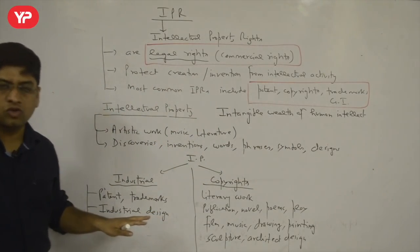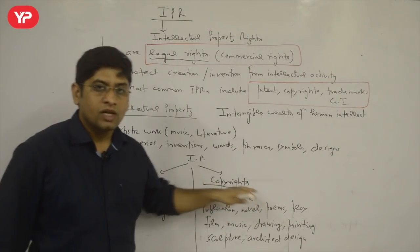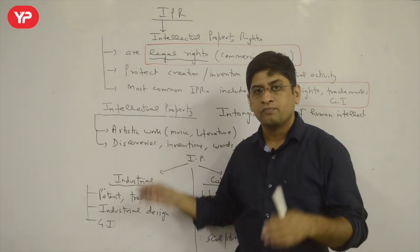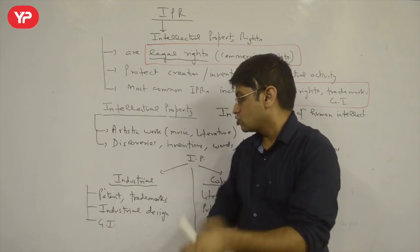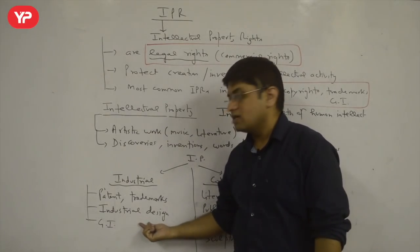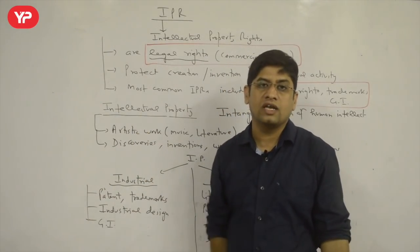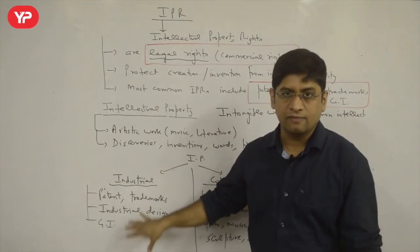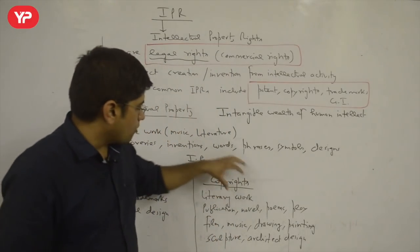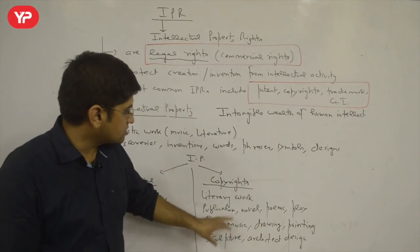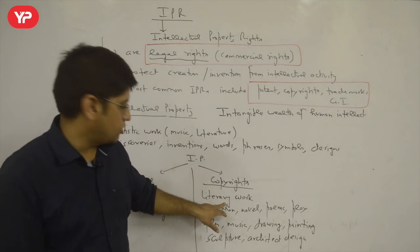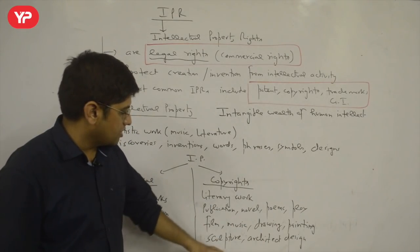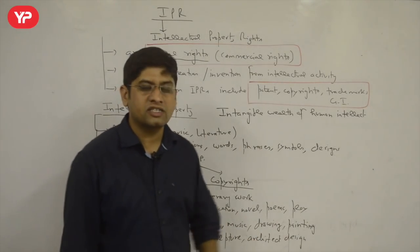Broadly, intellectual property can be divided into two categories: Industrial and Copyright. Industrial covers things related to machines — patent, trademark, and geographical indicators for things made in industry. Copyright covers: books, publications, novels, poems, plays, films, music, drawings, paintings, sculptures, and architectural designs. These terms — patent, trademark, copyright, geographical indicators — are what we need to know, and their common name is intellectual property.